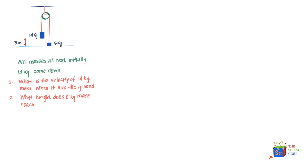Another very interesting problem around the work-kinetic energy theorem. Given in this problem: there are two masses, one of 14 kilograms and the other of 8 kilograms. The 14 kilogram mass is at a height of 5 meters and is let go from rest. It drops 5 meters. The question is: what is the velocity of the 14 kilogram mass when it hits the ground, and to what height will the 8 kilogram mass rise?